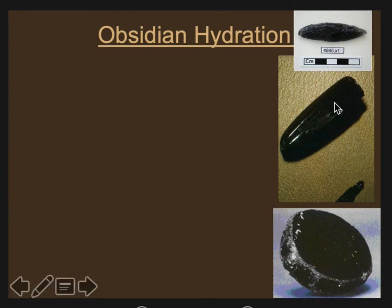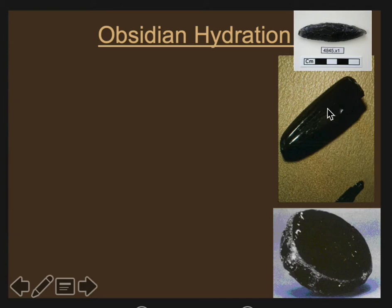Obsidian is a black volcanic glass. It's very, very sharp — we'll get to see some obsidian this semester. It was used as tools by ancient people, very highly prized, a great commodity in the ancient world.